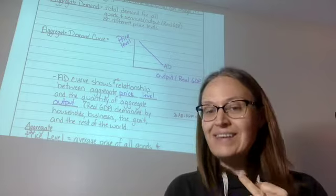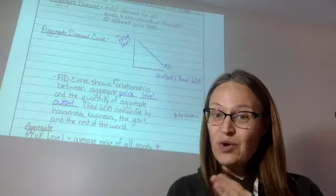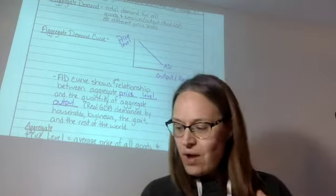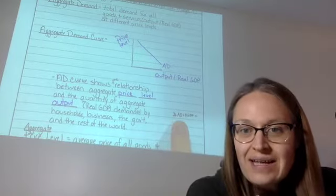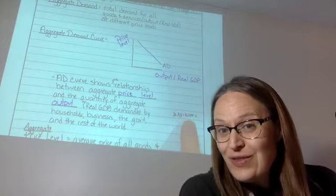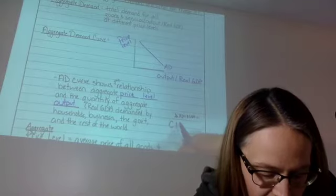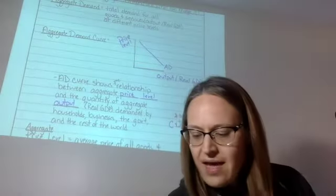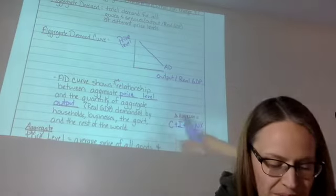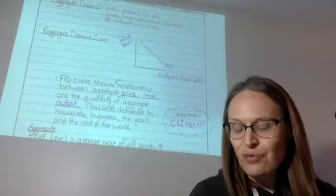Households is C, businesses is I, government is G, rest of the world is NX. So over here, we've got aggregate demand is equal to the real GDP, and that is equal to C plus I plus G plus NX. And that is going to be important to remember a little bit later in our notes for today.